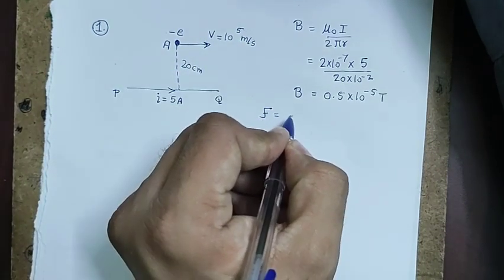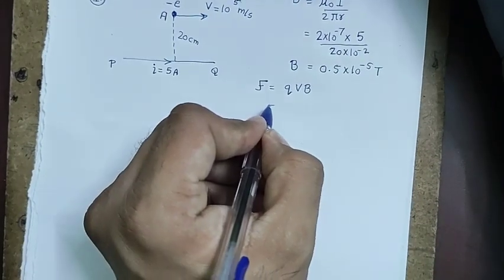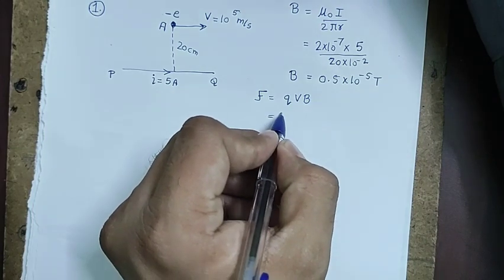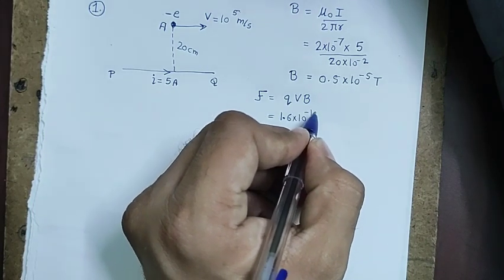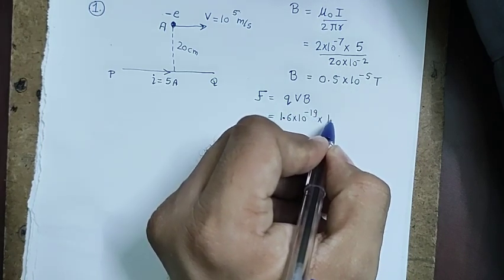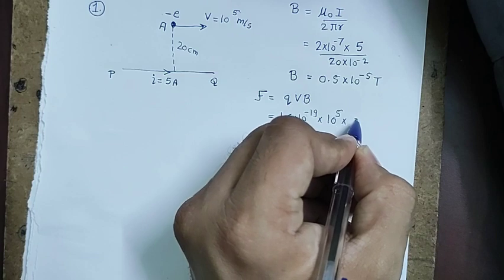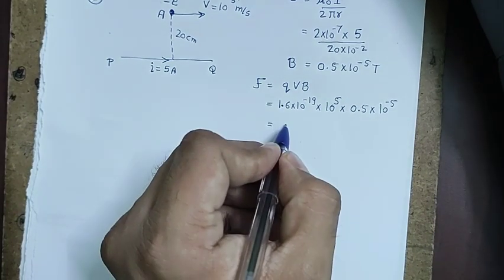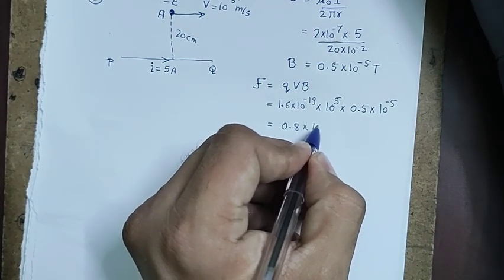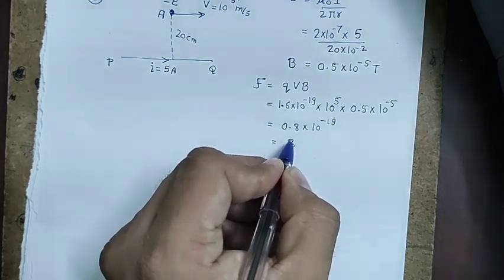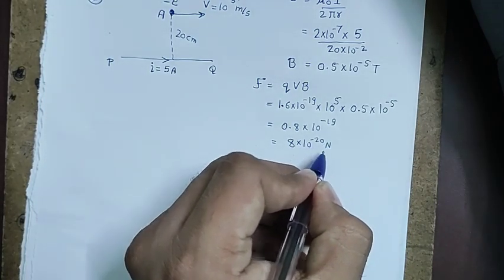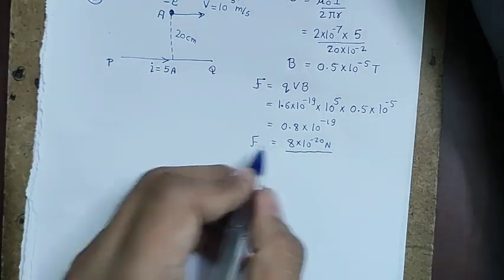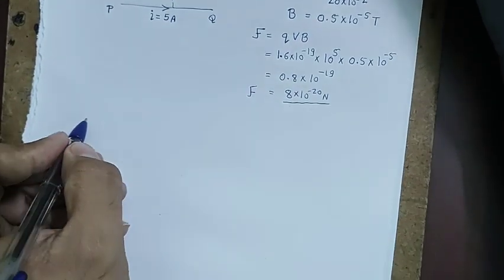The force on the electron is F = qvB. The angle between v and B is 90°, so no need for sin θ. With q = 1.6×10⁻¹⁹ C, v = 10⁵ m/s, and B = 0.5×10⁻⁵ T, the result is 8×10⁻²⁰ newton, which is option 4.